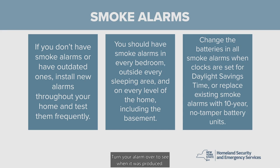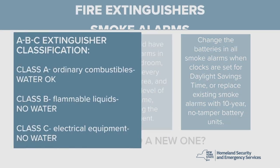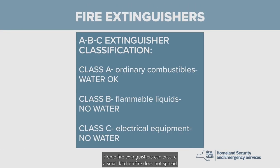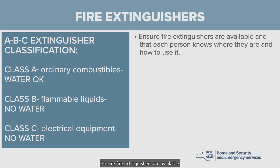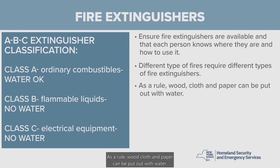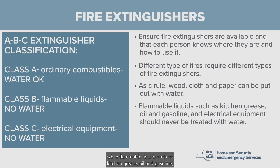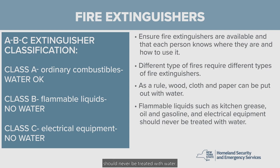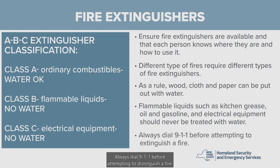Turn your alarm over to see when it was produced — do you need a new one? Home fire extinguishers can ensure a small kitchen fire does not spread. Ensure fire extinguishers are available and that each person in your home knows where they are and how to use them. Wood, cloth, and paper can be put out with water, while flammable liquids such as kitchen grease, oil, and gasoline, and electrical equipment such as appliances and televisions should never be treated with water. Always dial 911 before attempting to extinguish a fire. Never put your personal safety on the line when trying to put out flames.